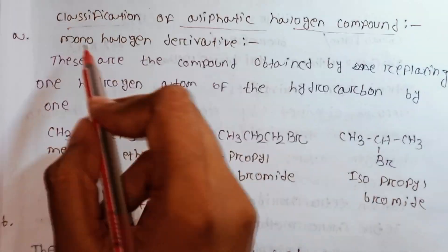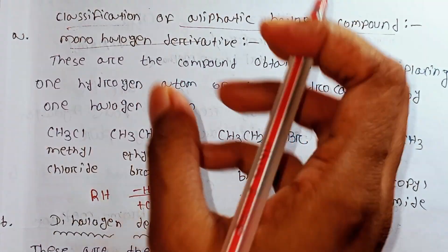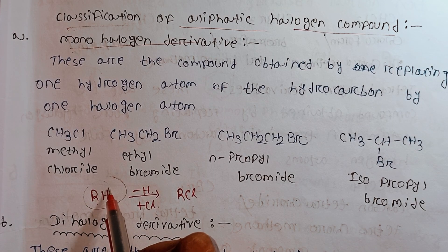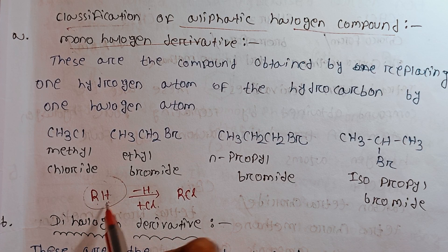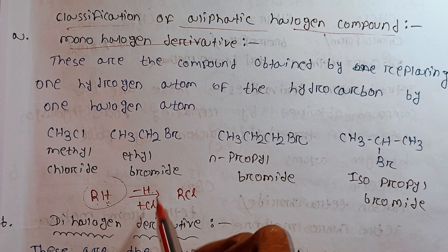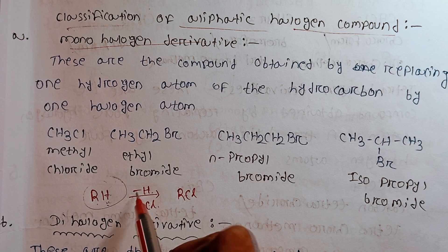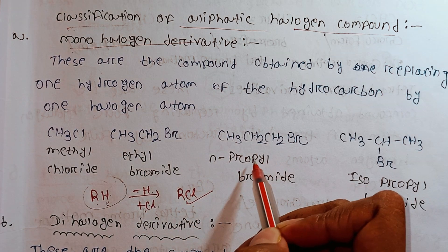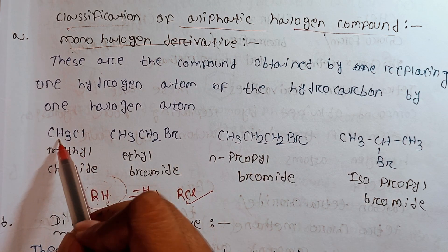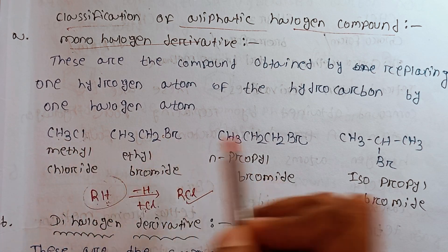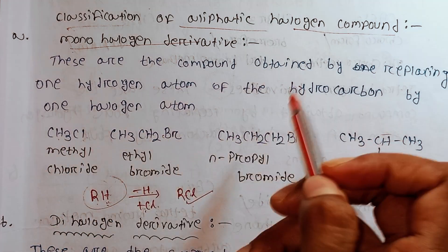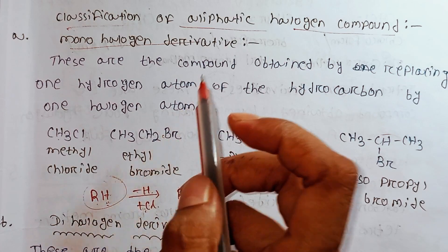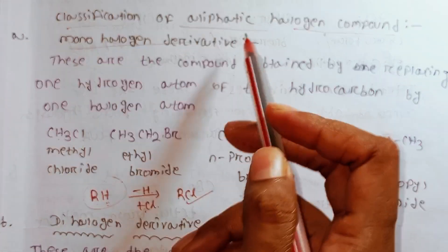The first topic is monohalogen derivative. The second topic is monohalogen derivative. CH3Cl has all the different halogens. I can write the monohalogen derivative.